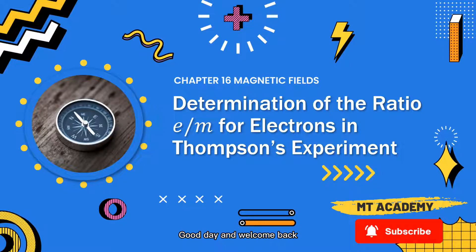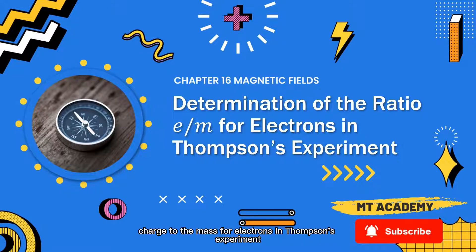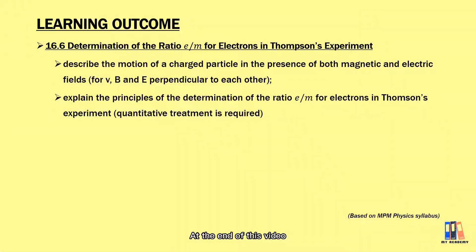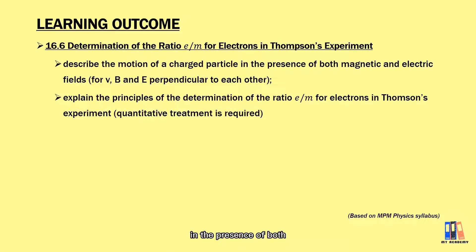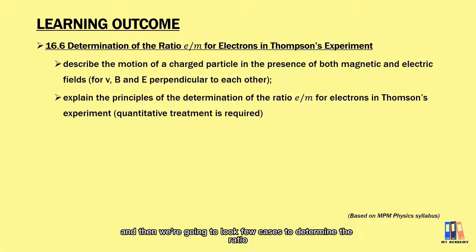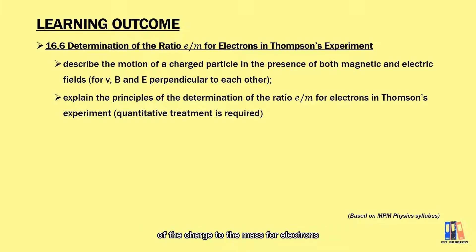Good day and welcome back. Today we're going to look into the determination of the ratio of charge to mass for electrons in Thomson's experiment. At the end of this video, you should be able to describe the motion of a charged particle in the presence of both magnetic and electric fields, and then we're going to look at a few cases to determine the ratio of the charge to the mass for electrons.